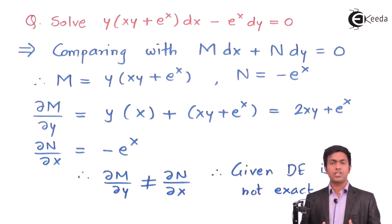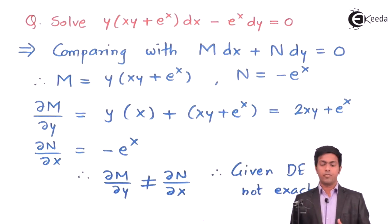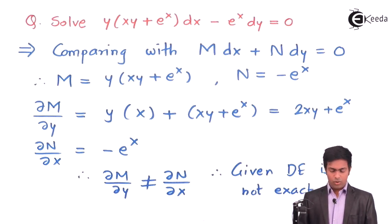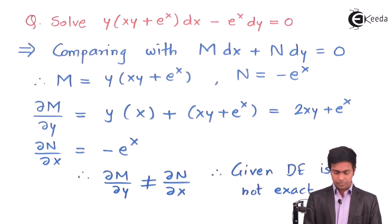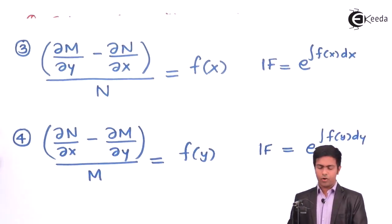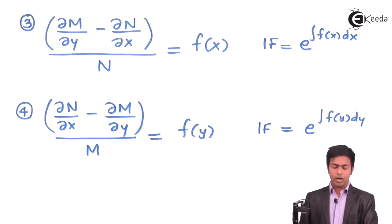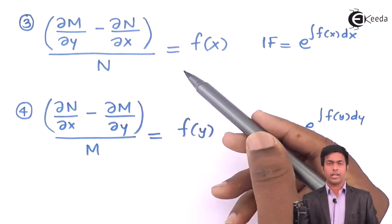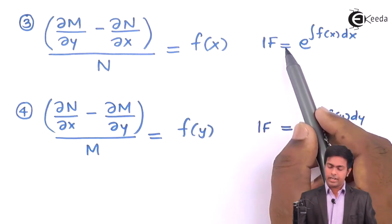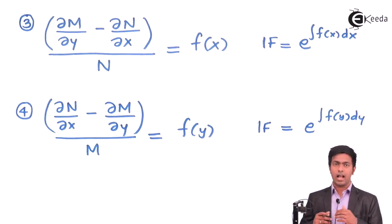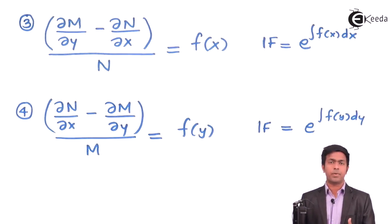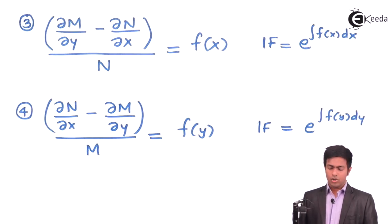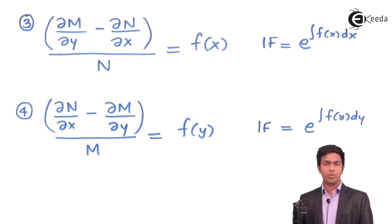Since this equation is not exact, we cannot use the method of exact differential equations. The question now is which method we must apply to get the answer. We observe other standard forms: if (∂M/∂y − ∂N/∂x)/N equals f(x), then the integrating factor is e^∫f(x)dx. Let's check form 4, where we compute (∂N/∂x − ∂M/∂y)/M.